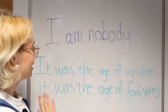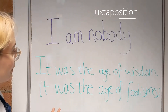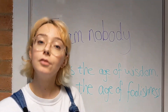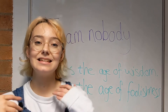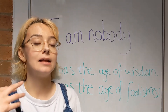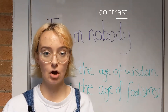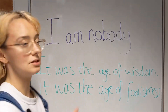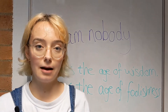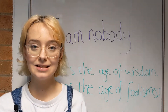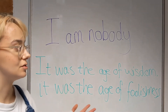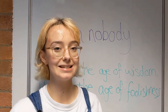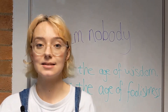Then we have juxtaposition. We have it here: 'It was the age of wisdom, it was the age of foolishness.' This is where we have a deliberate contrast of two words or phrases. Compared to the oxymoron, they don't necessarily contradict each other. This is used to describe both the wisdom and foolishness that exists in society.